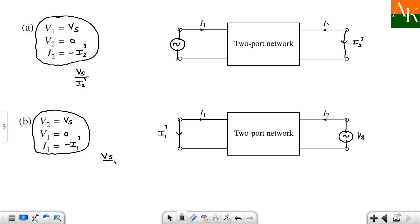In the first case, we got Vs by I2 dash, and in this case, Vs by I1 dash. If these two ratios are equal, then the network is said to be reciprocal. Or you can say that for a network to be reciprocal, these two ratios should be the same.